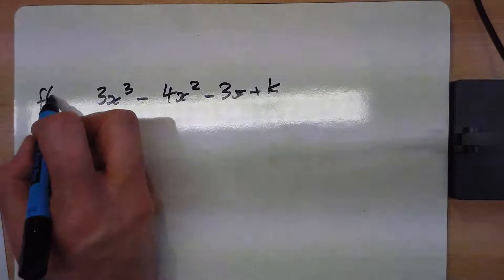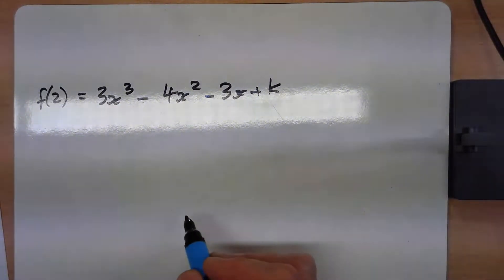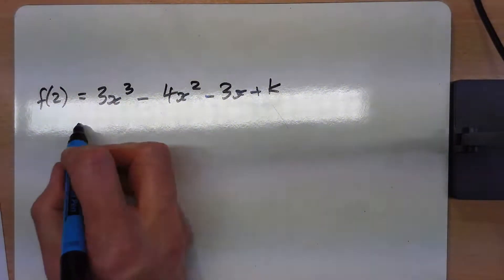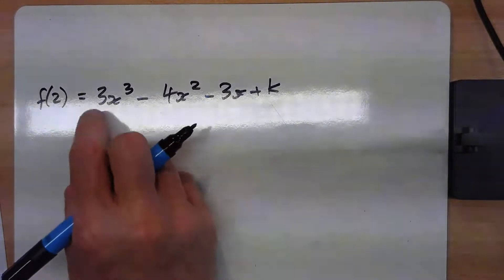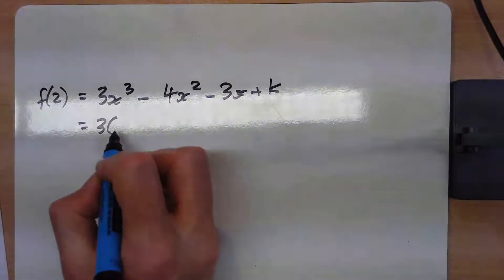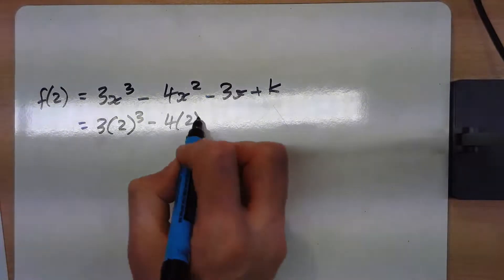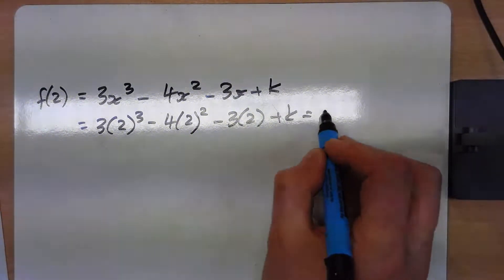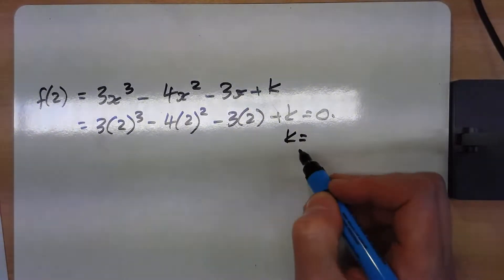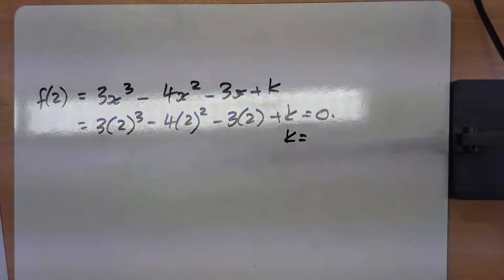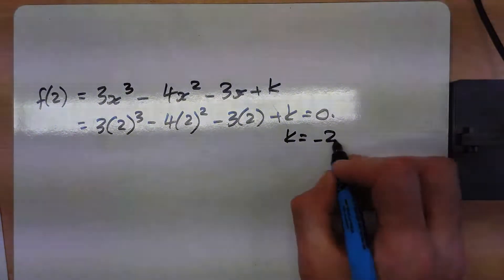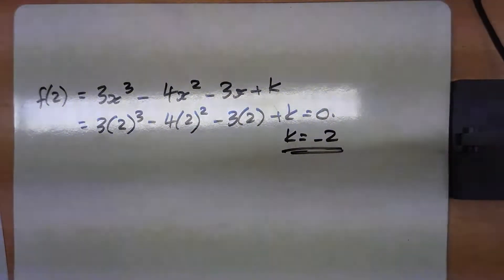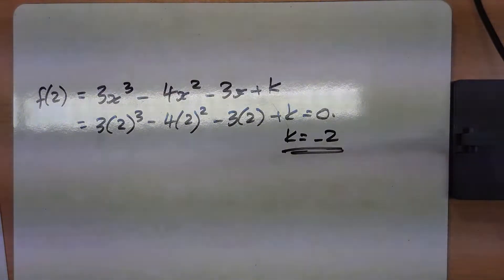So if 2 is a root, f of 2 is going to equal 0, so we're going to put a 2 into here. This will equal 0, and k is going to then turn out to be minus 2. Okay, so we've got that k is minus 2 from that bit there.